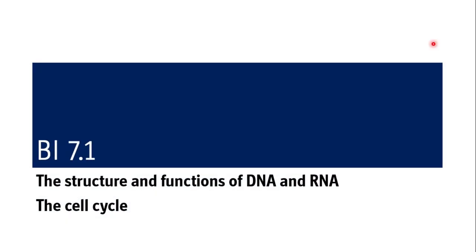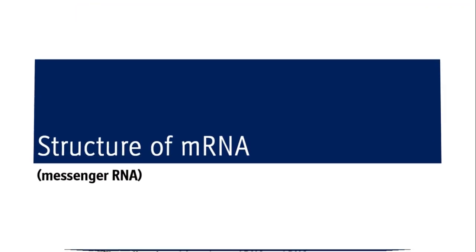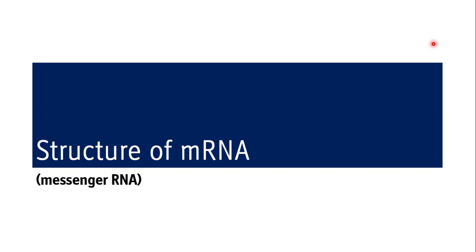The same competency we are dealing with is BI 7.1 — the structure and functions of DNA and RNA, and the cell cycle. After finishing the structure of DNA, we are now moving on to the structure of mRNA, that is messenger RNA.